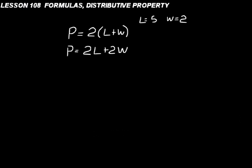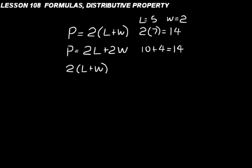You would think that both of those perimeter formulas would give you the same answer — let's just see. The first one: 2 times (5 plus 2), or 2 times 7, equals 14. The second one: 2 times 5 is 10, plus 2 times 2 is 4 — that also equals 14. So we get the same answer either way. That means 2(L plus W) equals 2L plus 2W, and that right there is an example of the distributive property.